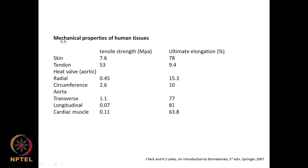Looking at mechanical properties of human tissues: skin has a tensile strength of 7.6 megapascal and ultimate elongation of 78 percent. Tendon has a tensile strength of 53 megapascal and ultimate elongation of 9.4 percent. Heart valve aortic radial tensile strength is 0.45 megapascal, circumferential is 2.6 megapascal; aorta transverse is 1.1 and longitudinal is 0.07 megapascal — very very low. Cardiac muscle tensile strength is 0.11 megapascal.